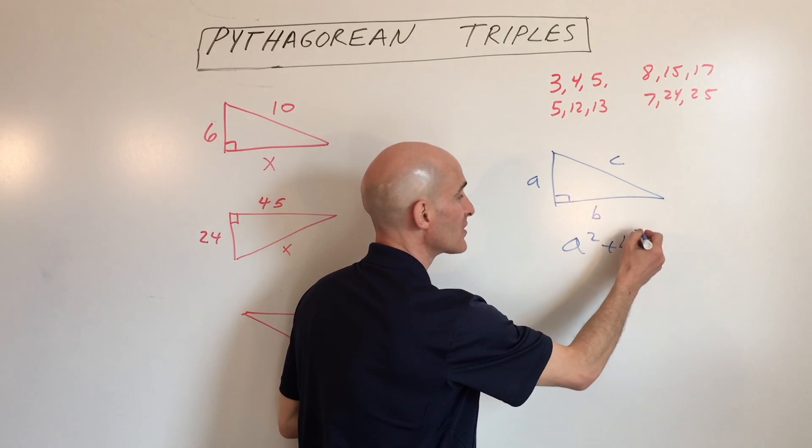What we can do is say, what number goes into 6 and 10 evenly, just like you're reducing a fraction. Like if you're reducing 6 tenths, what would you reduce it to? Well, 2 goes in here 3 times, 2 goes in here 5 times.